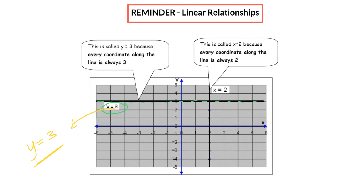So why is it y equals 3? What we're looking to do is see if there's something that each point lying on that line has in common. If we look at the coordinates, the x value always changes, but the one consistent value is that y equals 3. So the whole line is represented by y equals 3. If we look at the vertical line in red, each point starts with the x coordinate 2.